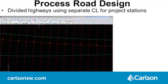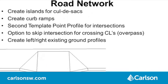Process Road Design has a new method for dealing with divided highway design where the program uses two center lines — one is the master center line for stationing and the other is for the road alignment. Road Network has a new feature for creating islands for cul-de-sacs and a new feature for creating curb ramps at driveways or handicap ramps. For intersections, there's a new control for having a second template point profile within the intersection curb return, such as for a custom ditch profile. There's also an option to skip the intersection for crossing center lines, such as for an overpass.